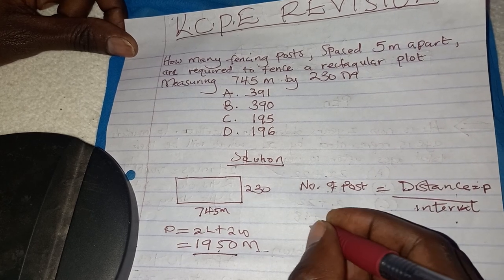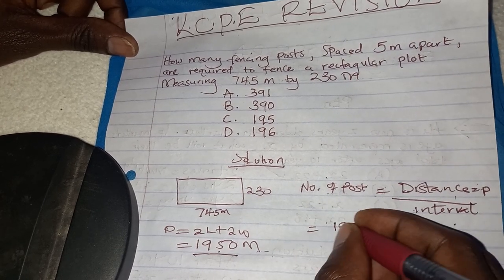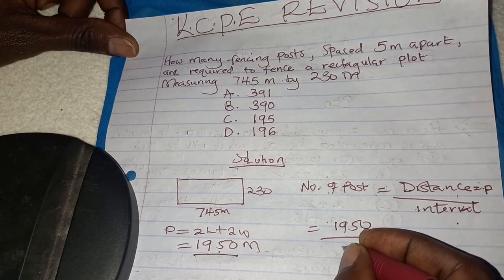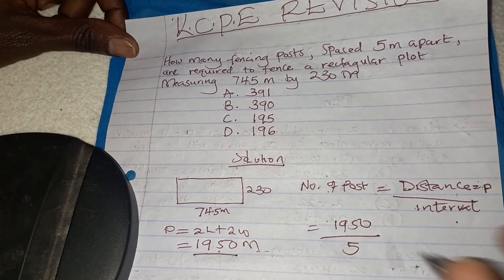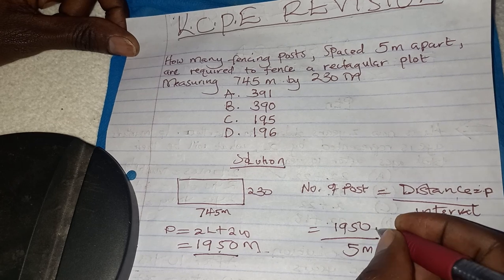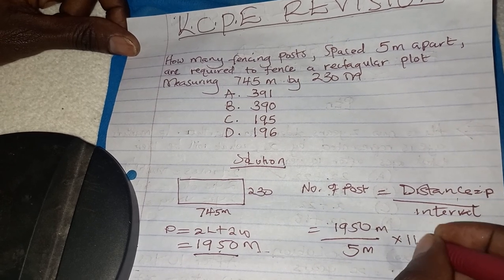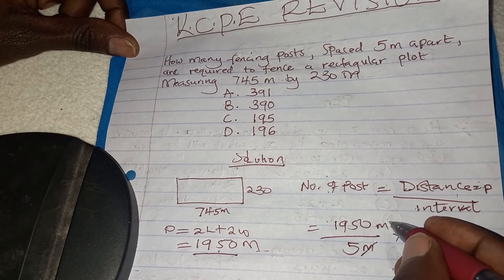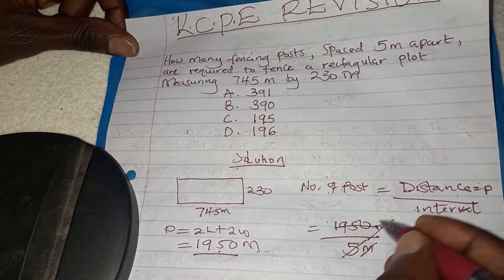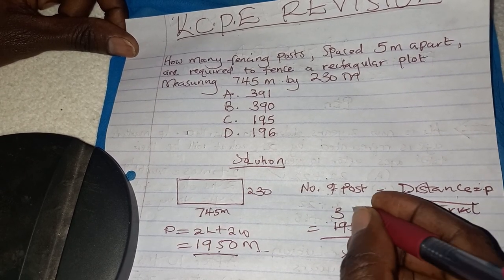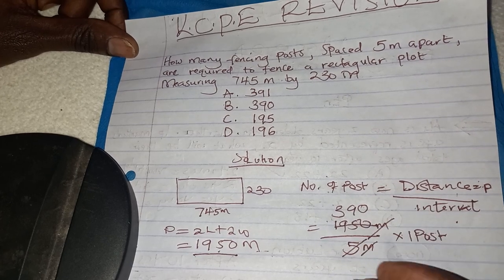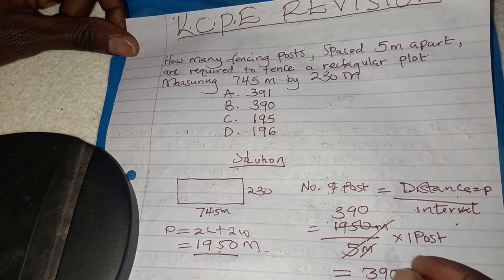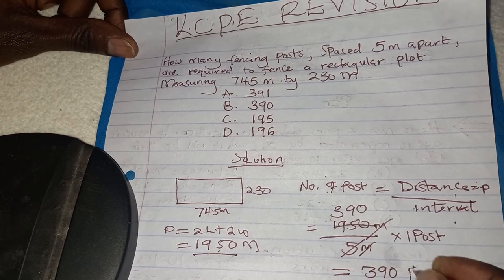We say: number of posts = 1950 ÷ 5. These are meters. After dividing, you get 390. So our answer is 390 posts.